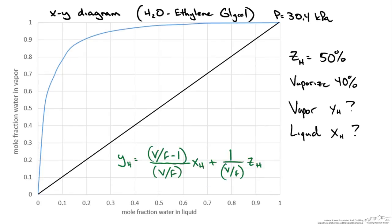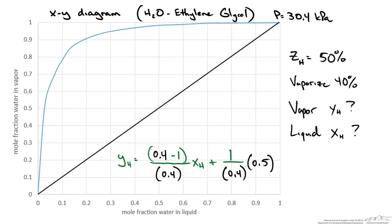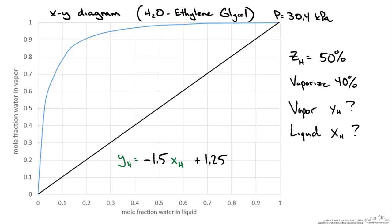We take our operating line and plug in the known information. The feed mole fraction of water is 0.5, and the vapor-to-feed ratio V/F is 0.4. Substituting these values and simplifying, we get a line with a y-intercept of 1.25 and a slope of negative 1.5.